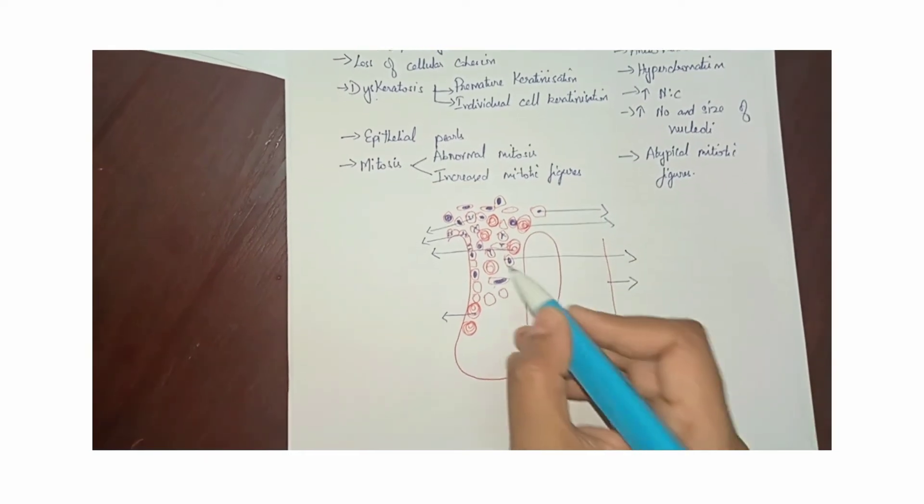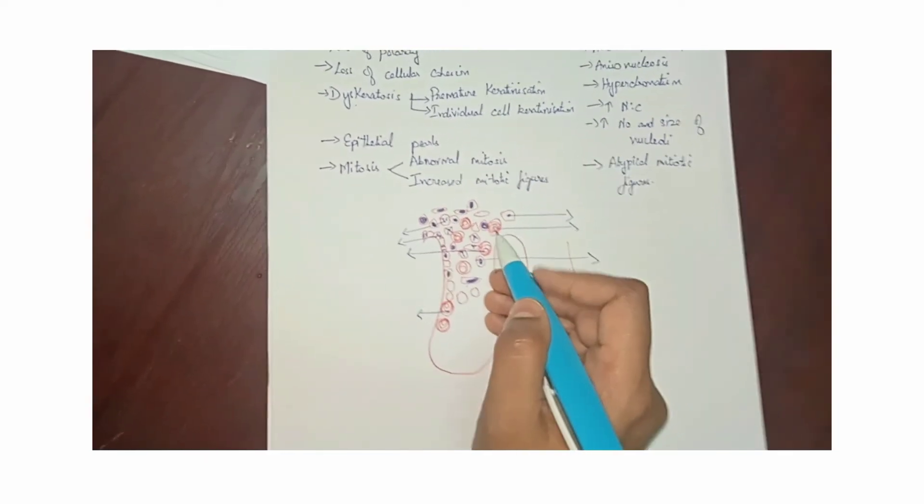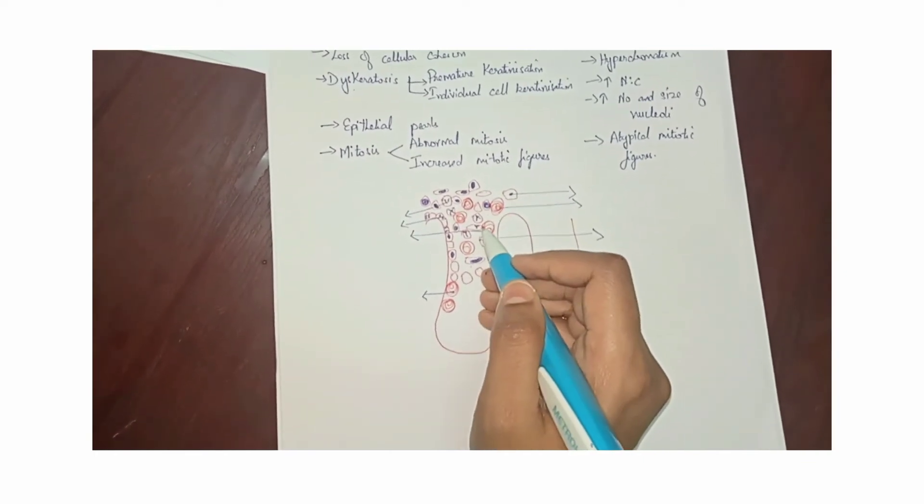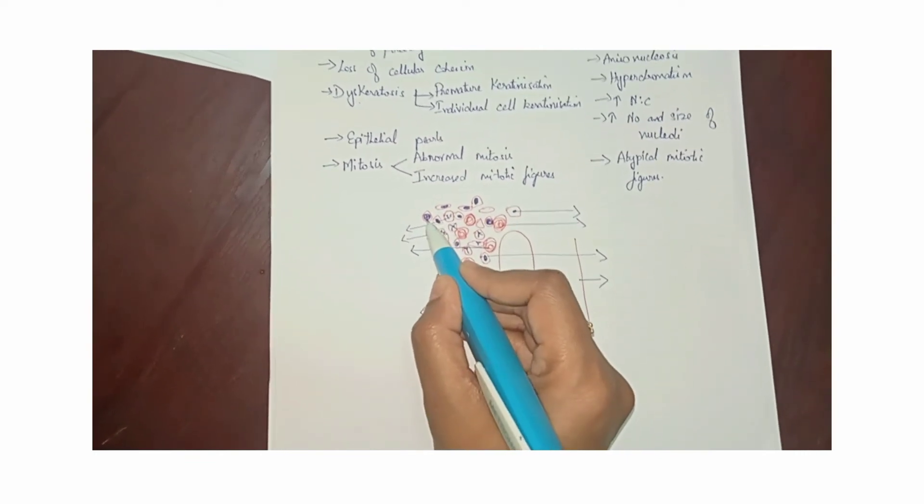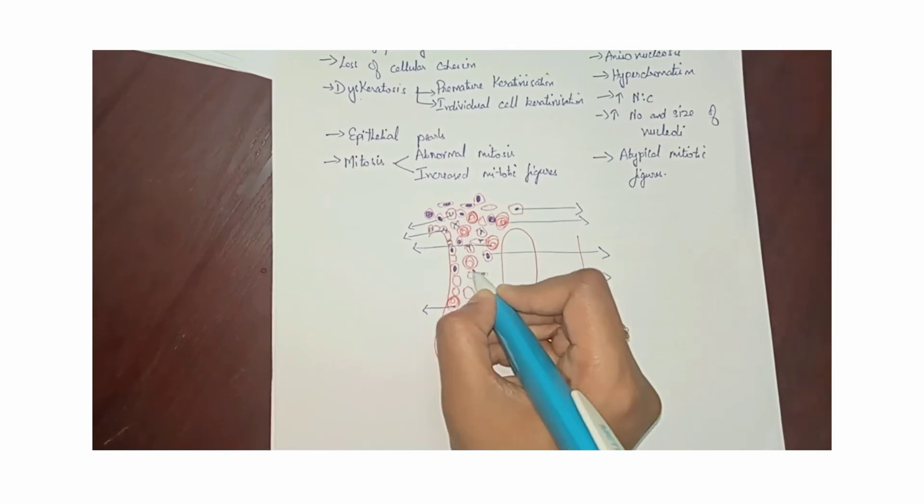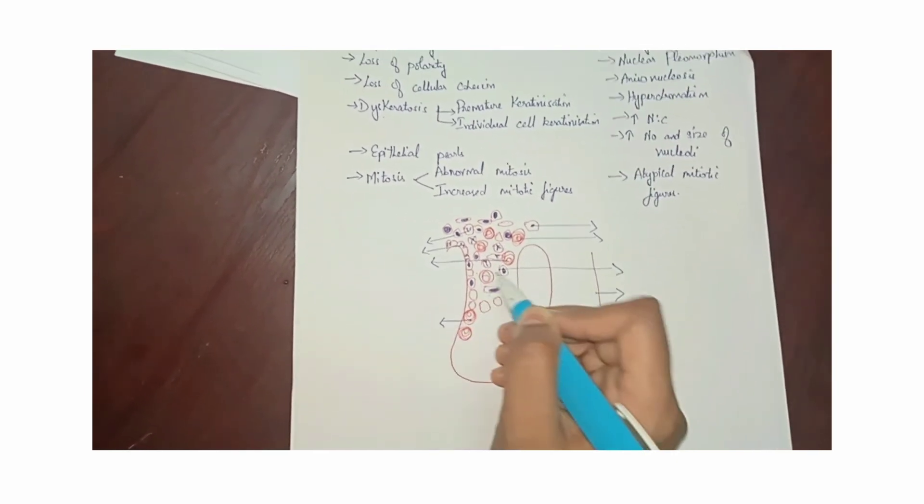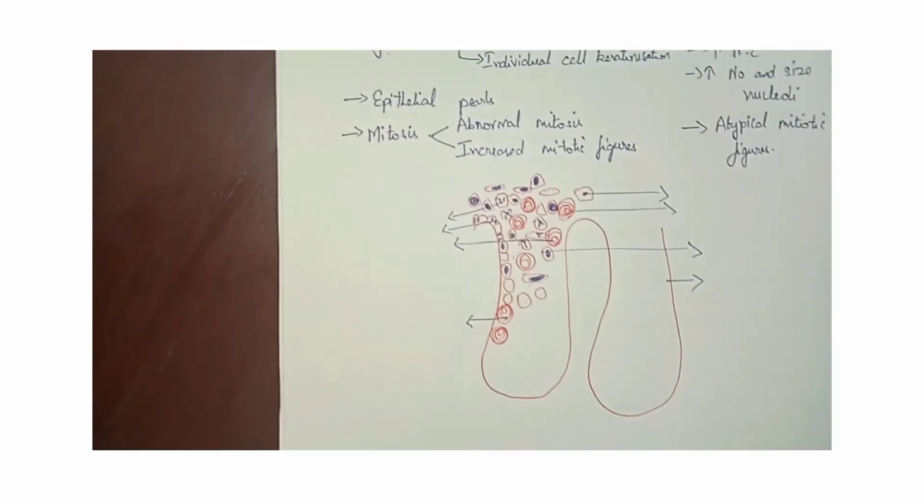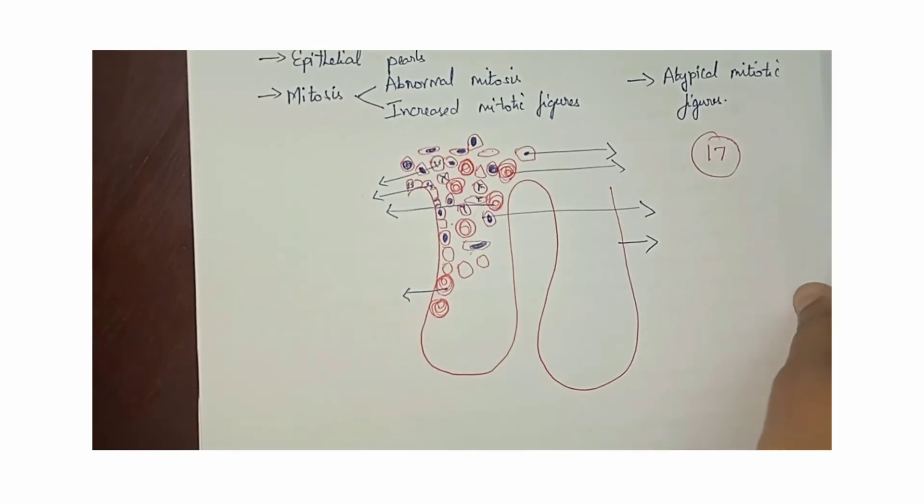Similarly, at the cellular level there is going to be anisocytosis, anisonucleosis, cellular pleomorphism, nuclear pleomorphism, hyperchromatism, increase in the nuclear cytoplasmic ratio, increase in the nucleoli number and size, and also the presence of atypical mitotic figures. All together around 17 changes will be appreciated. Thank you.